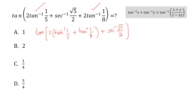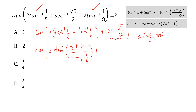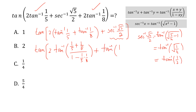We take 2 common from this term. Using the addition formula, we can write this as 2·tan⁻¹ of (1/5 + 1/8) divided by (1 minus 1/5 times 1/8). For the secant inverse term, we use the formula that sec⁻¹(√5/2) equals tan⁻¹ of square root of (5/4 minus 1), which equals tan⁻¹ of square root of 1/4, which equals tan⁻¹(1/2).